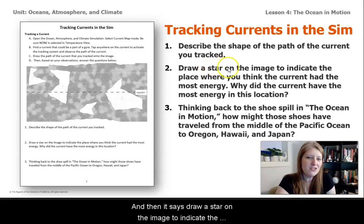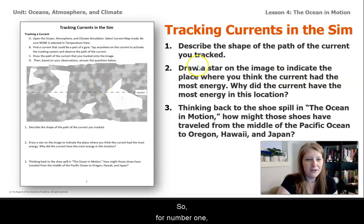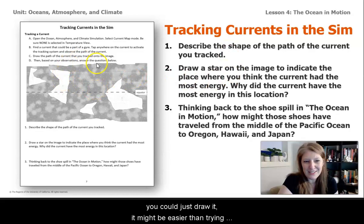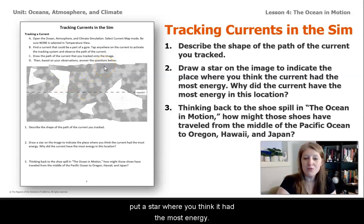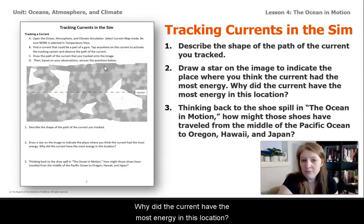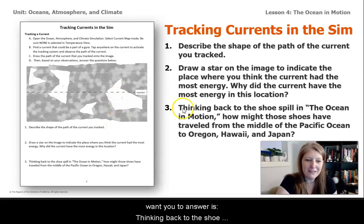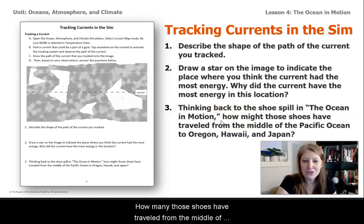For number one, where it says describe the path, you could just draw it — it might be easier than trying to describe it as a circle. Show where it is and then draw a star where you think the current had the most energy. Then answer: why did the current have the most energy in this location, and what evidence supports your idea? The final question is: thinking back to the shoe spill in Ocean in Motion, how might those shoes have traveled from the middle of the Pacific Ocean to Oregon, Hawaii, and Japan?